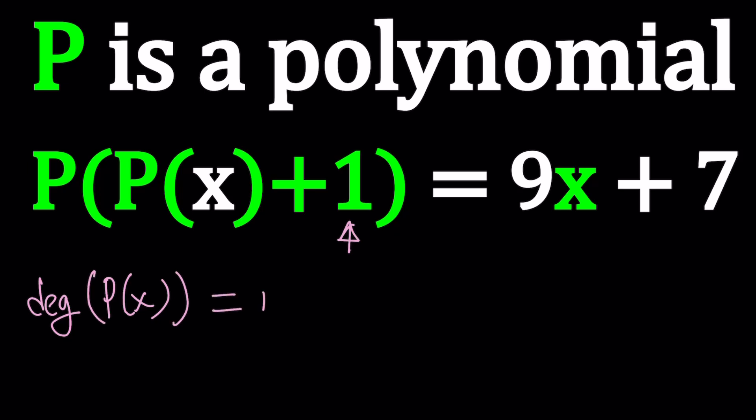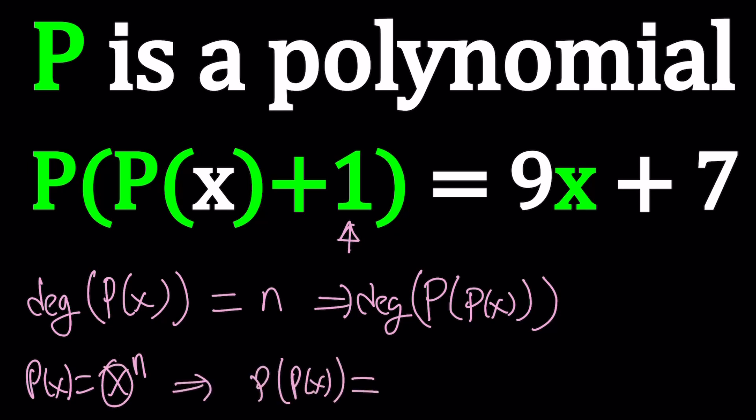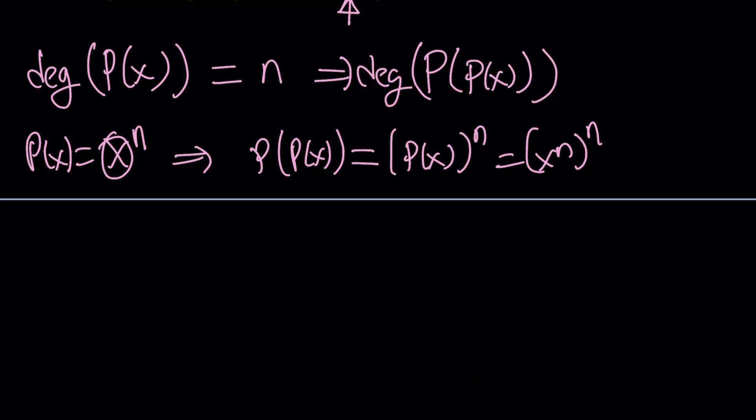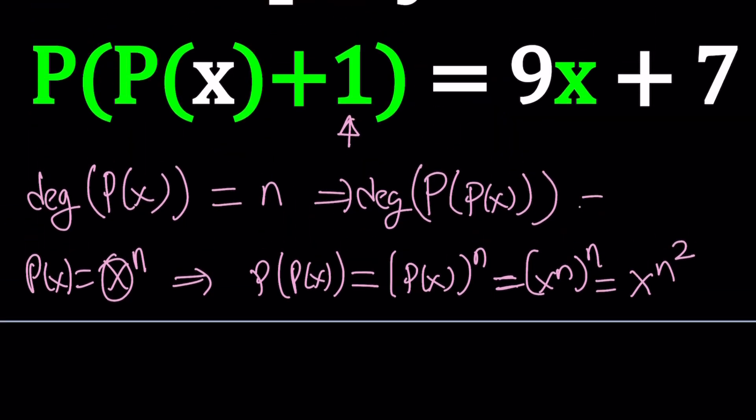Suppose the degree of P(x) is n. Then the degree of P(P(x)) is just going to be what? Think about it this way. You have x to the power n. And then P(P(x)) means replace the x with P(x) in P(x). So it's going to look like P(x) to the power n. That's going to be your new argument. Since P(x) is x to the power n, it's going to be (x^n)^n, so kind of like powering back to back. That's going to become x^(n²), because n times n is n². So if degree of P is n, then degree of P(P) is n².